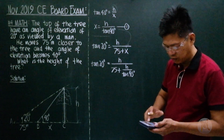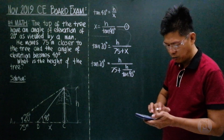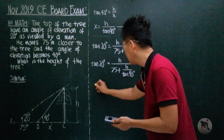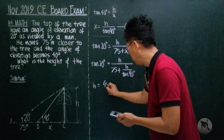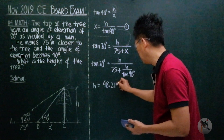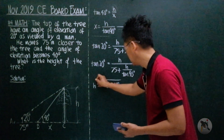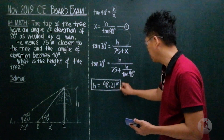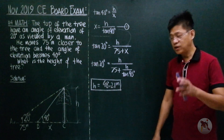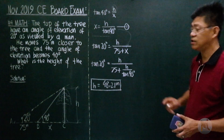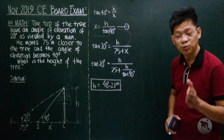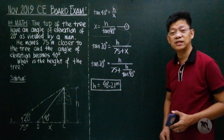Input this into your calculator and you will get h equals 48.21 meters. Now there is another solution to this, which I call the Peripheral Angle Theorem — other authors and books call it the Inscribed Angle Theorem.